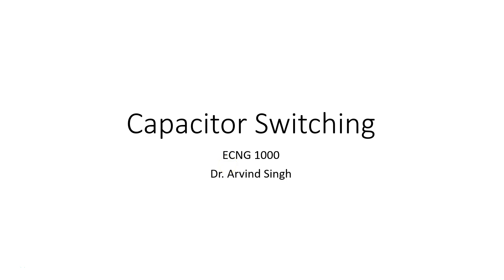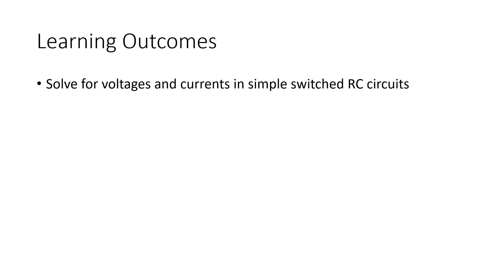Hello everyone. Today we're going to look at transients in electrical circuits and we're going to start with a very simple case of capacitor switching. Up to this point we've basically covered DC circuits, static circuits where the voltages don't change at all, everything has been resistive. Now we're going to introduce capacitors and inductors. By the end of this session you should be able to solve for the voltages and currents in simple switched RC circuits.